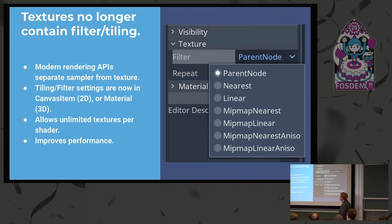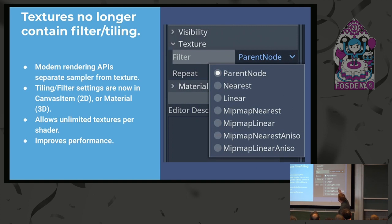One last change: in Godot 4 textures and samplers are now separate. In OpenGL in Godot 3, the interpolation, mipmaps, and everything was stored in the texture itself. Now textures and samplers are separate, which means you can have as many textures as you want using the same sampler. However, users now have to configure filtering per node for 2D, and in materials you configure the filtering of the material, no longer in the texture. This improves performance and enables unlimited textures, but the workflow is just a bit different.